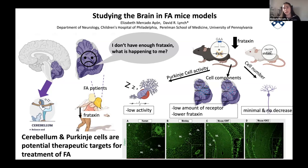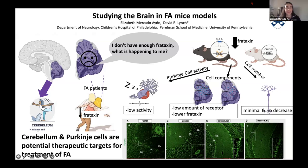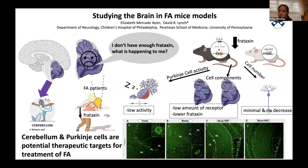From these results, we know that Purkinje cells are very important in the cerebellum, contain high amounts of frataxin compared to other cells, and their activity and cell components are affected in FA due to frataxin deficiency. Therefore, the cerebellum and Purkinje cells are potential therapeutic targets for treatment of FA. I've been in Dr. Lynch's lab for five years and on this specific project for about a year.